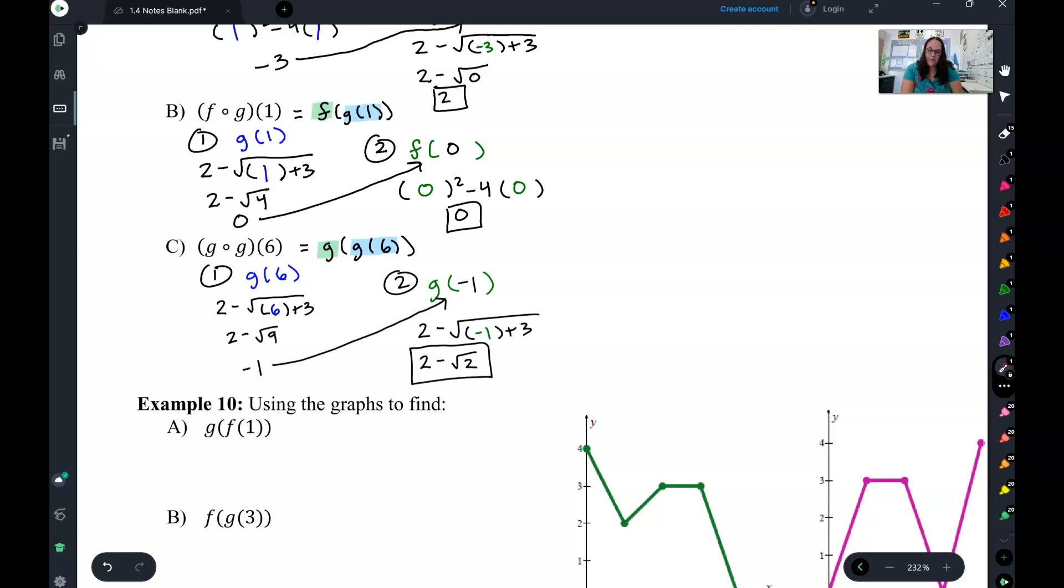Let's see how you did. So I started with g of 6. Did my g function, parentheses wherever x is, and plugged in 6. That gave me 2 minus square root of 9. Square root of 9 is 3, so 2 minus 3 is negative 1. I plugged that negative 1 into the outer function, which is still also a g. So I have g of negative 1. Negative 1 plus 3 is 2, so my final answer is 2 minus square root of 2.